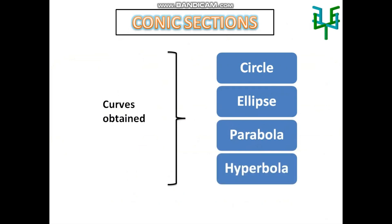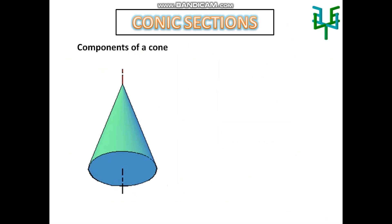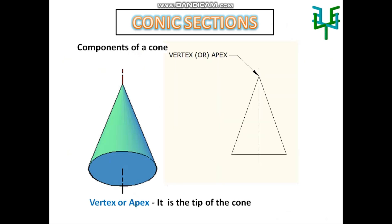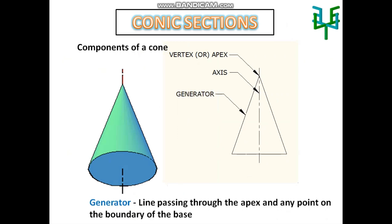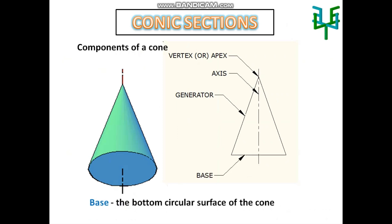Various components of a cone are: vertex or apex point — it is the tip of the cone; axis — it is an imaginary line passing through the apex point and center point of the base; generator — it is a line passing through the apex point and any point on the boundary of the base; and base — it is the bottom circular surface of the cone.